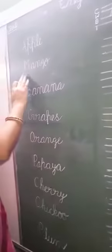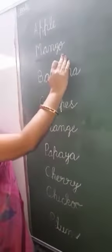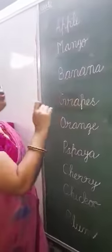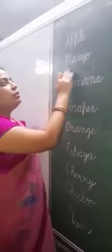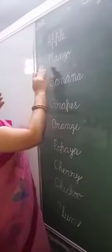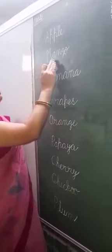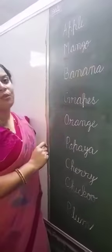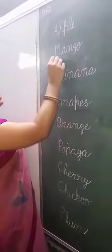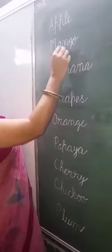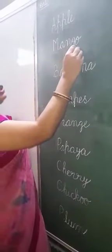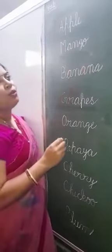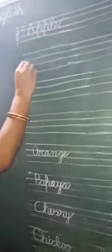Next, you all know the spelling of mango. Speak with me: M, A, N, G, O. Mango. M, A, N, G, O. Mango. Let's start.